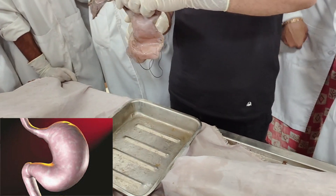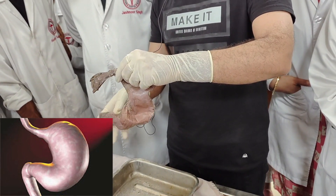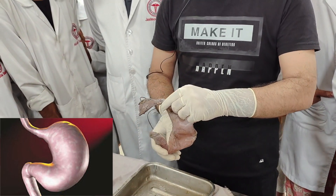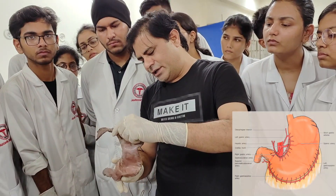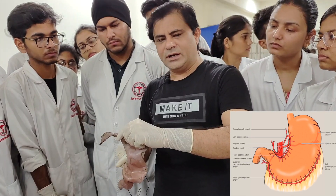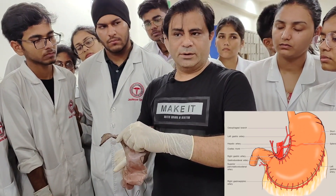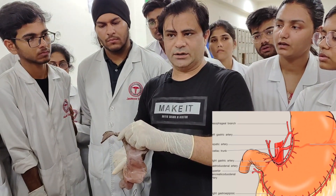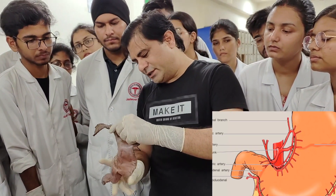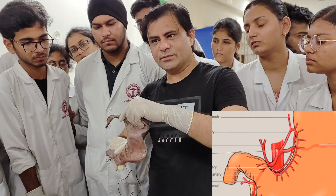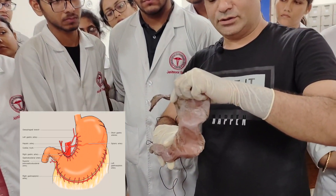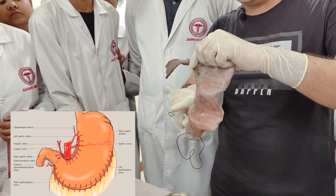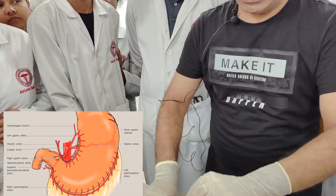Why does the lesser curvature take a J-shaped stretch rather than going in a circular way? The reason is that there is a prominent artery here — a major branch of the abdominal artery — which is the celiac trunk. Because the celiac trunk is placed along the lesser curvature, it couldn't go further in a circular manner, and that's why it becomes J-shaped.